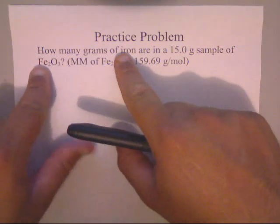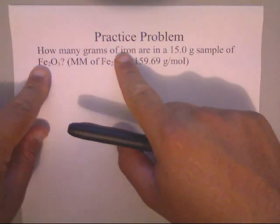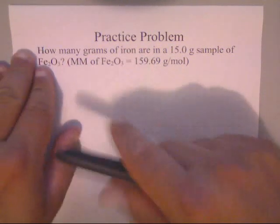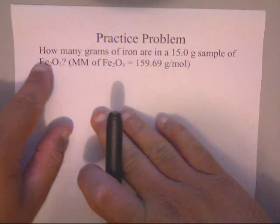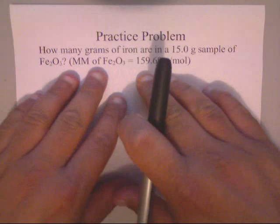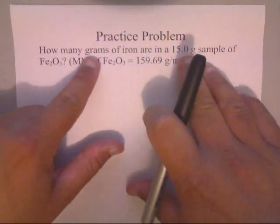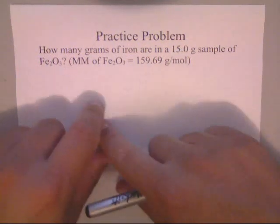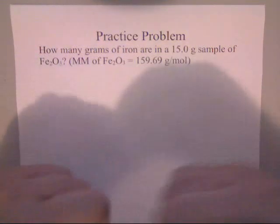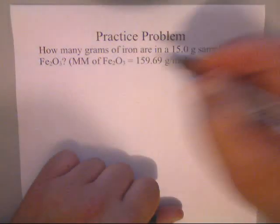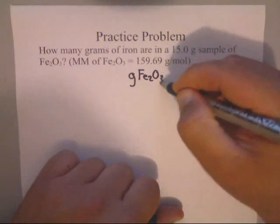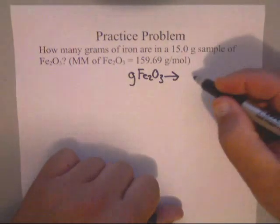Here they want you to go to just iron atoms. Notice there's two iron atoms and three oxygen atoms in the formula. They were nice enough to give us the molar mass, so let's think about how we're going from grams of Fe₂O₃ to just grams of Fe. It might help to make a chart - we want to go from grams of Fe₂O₃ to grams of Fe.